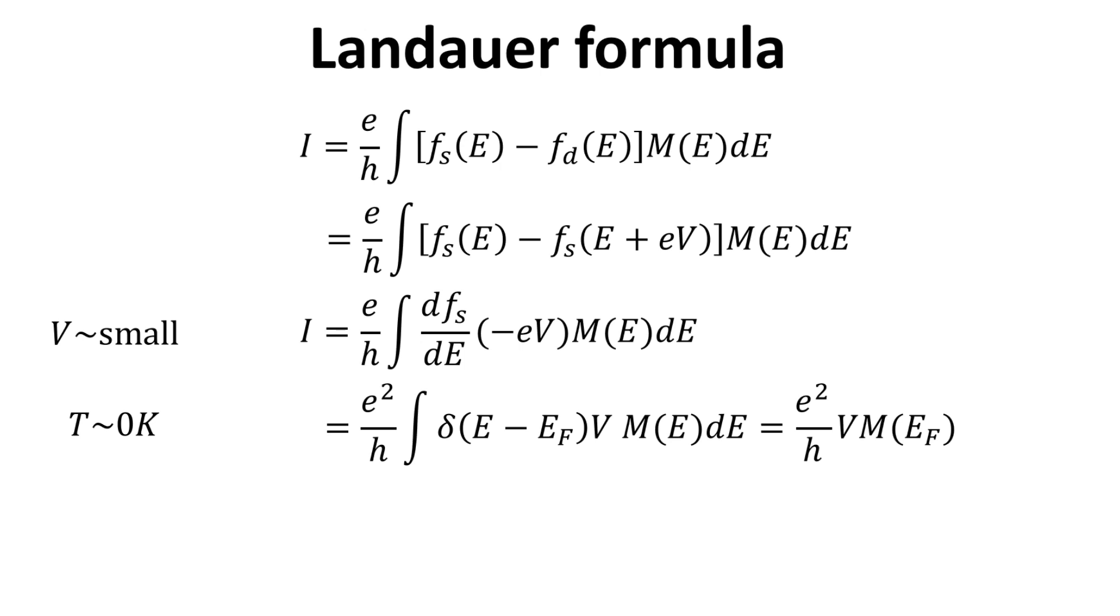At zero Kelvin, the differentiation of the Fermi function with respect to energy is the Dirac delta function located at the Fermi energy. This allows us to collapse the integral in energy, thus arriving at a compact expression for the current.